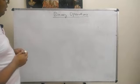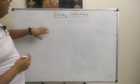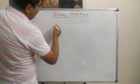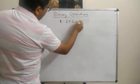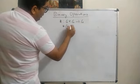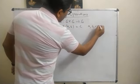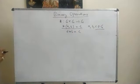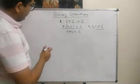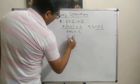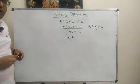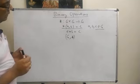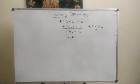Today we will discuss binary operations. In the last lecture we defined a binary operation: a binary operation star is basically a mapping from G cross G to G, meaning star(a,b) = c, written as a star b = c, where a, b, c all belong to G. We also discussed properties an algebraic structure (G, star) may have: associativity, commutativity, existence of identity, and existence of inverse.